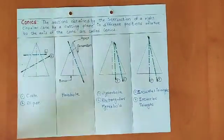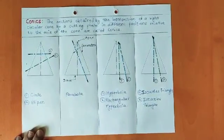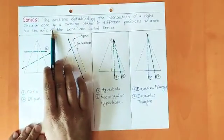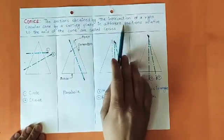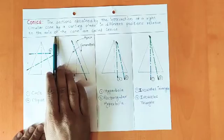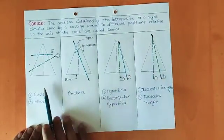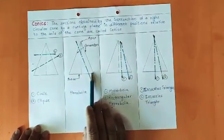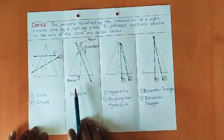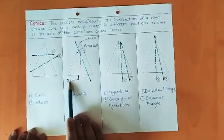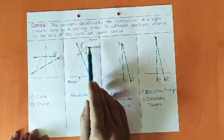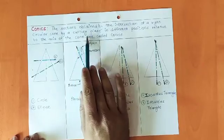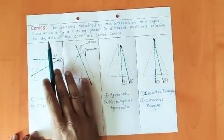Going into the introduction, we'll first go with the definition of conics. One definition of conics or conic section is: the sections obtained by the intersection of a right circular cone by a cutting plane in different positions relative to the axis of the cone are called conics. To understand that, I have drawn a few cases with a right circular cone resting on HP, showing front views. The base, end generators, and apex are indicated.